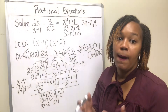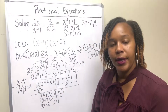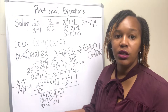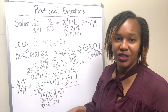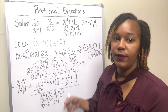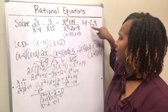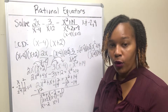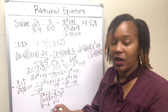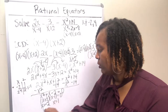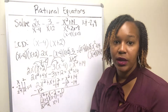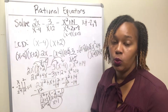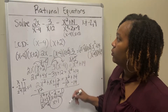Those are your two possible solutions, but you have to do one additional step — go back and check to make sure neither one of those numbers is in your restrictions. Our restrictions were x cannot equal negative 2 and x cannot equal 4. We got negative 2 as one of our possible solutions, and since that's a restriction, x cannot be negative 2. You're left with only one solution: x equals 1. That is your final solution.